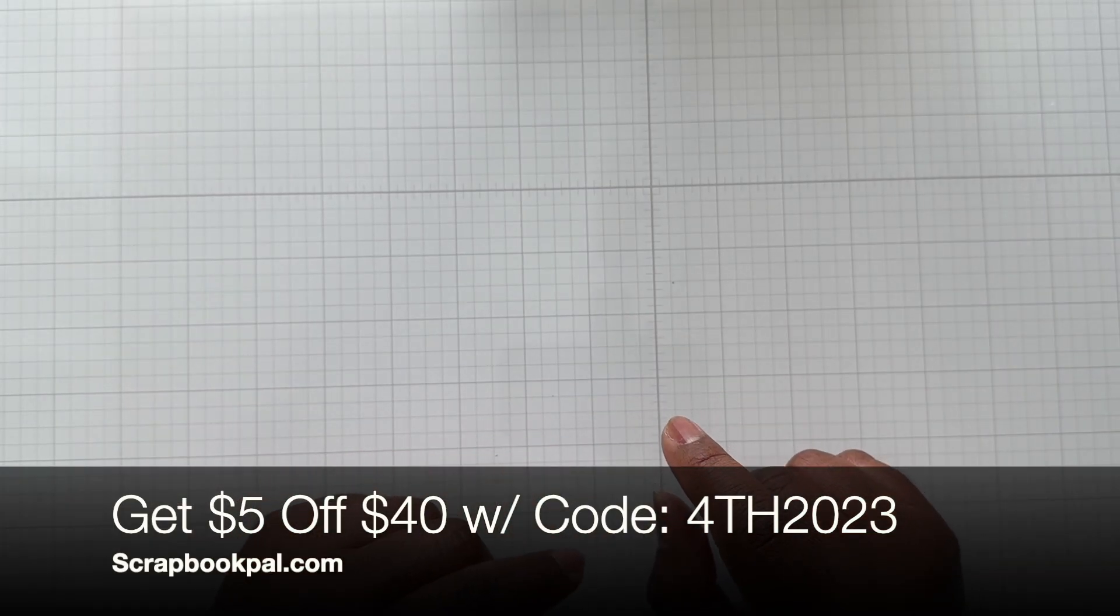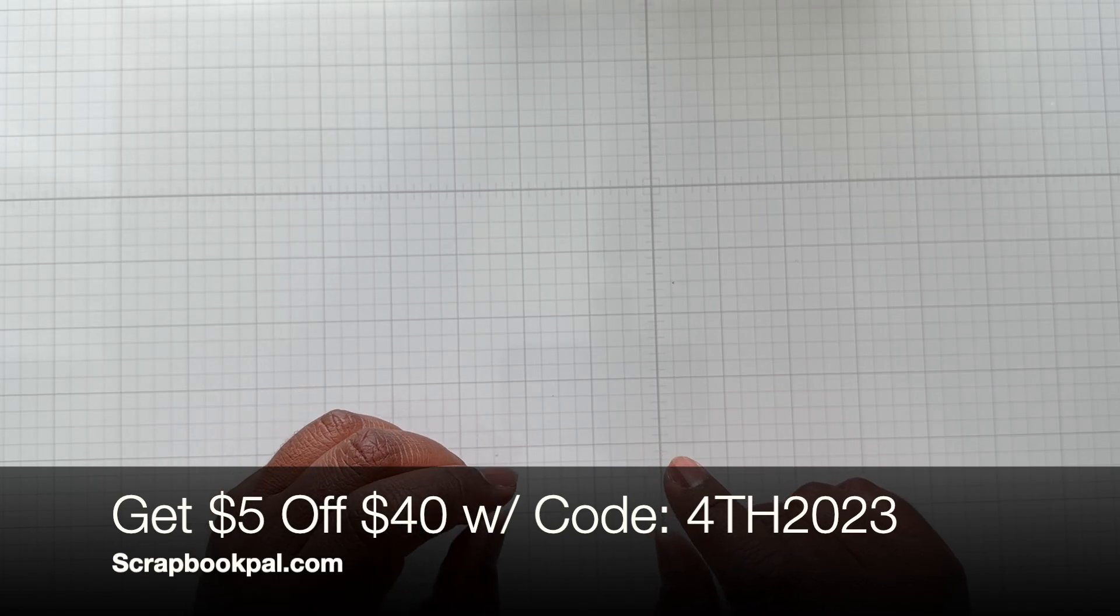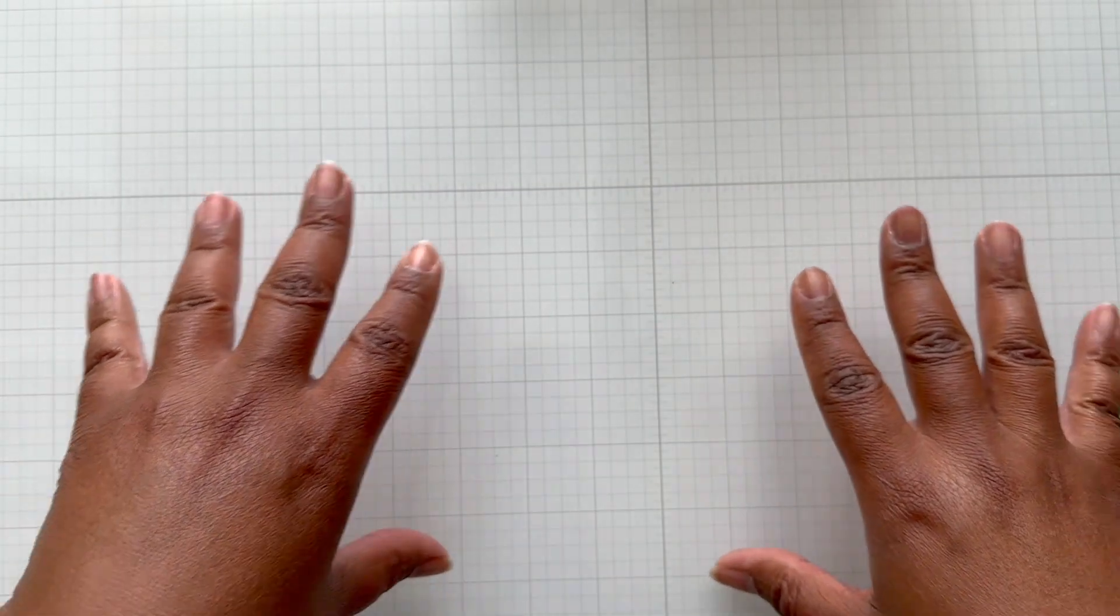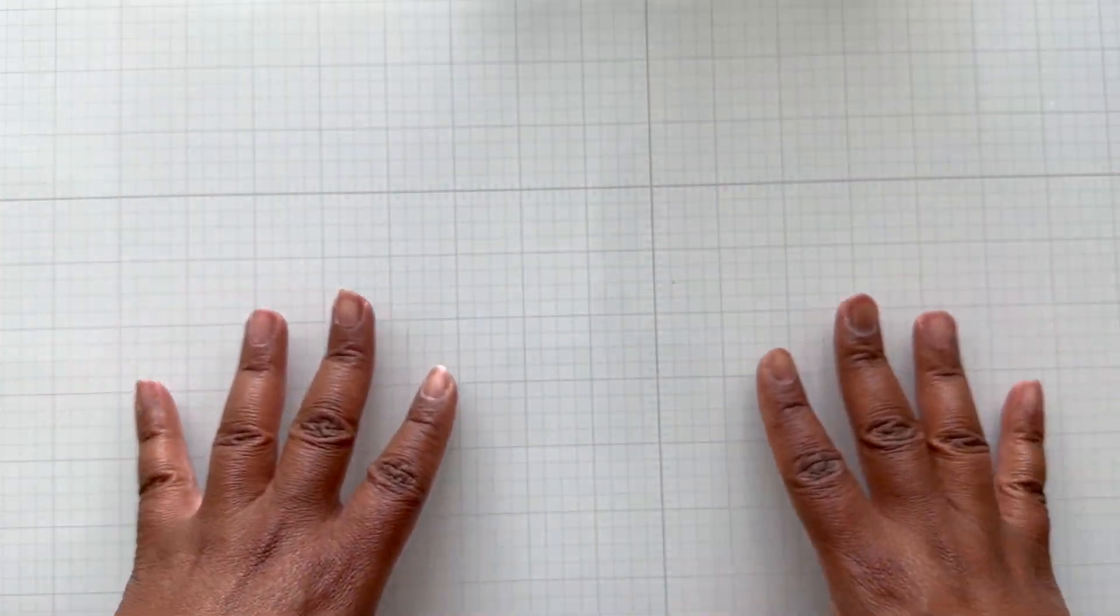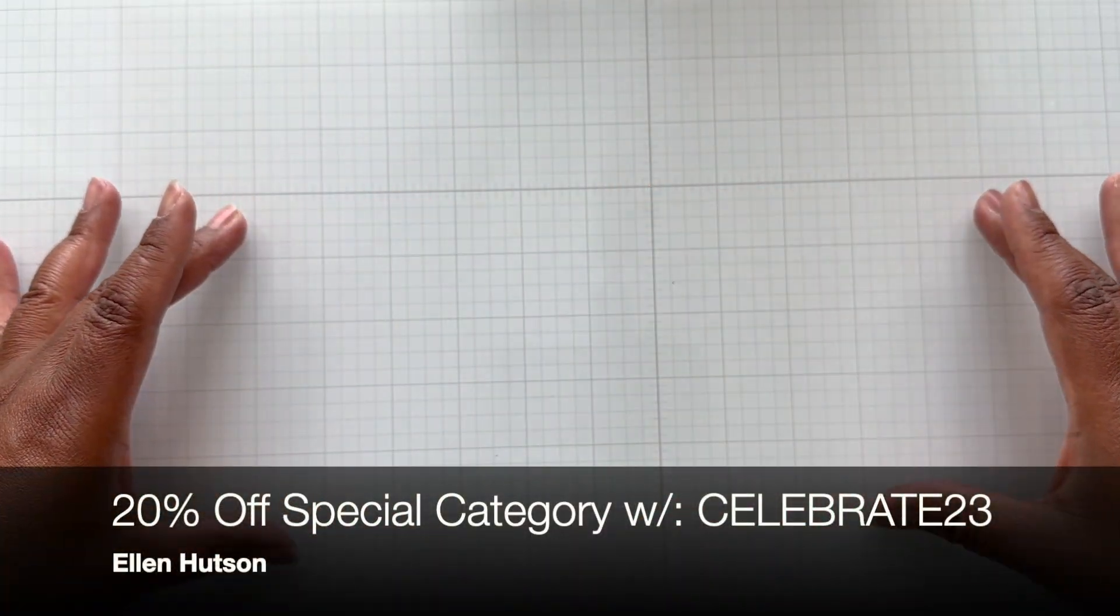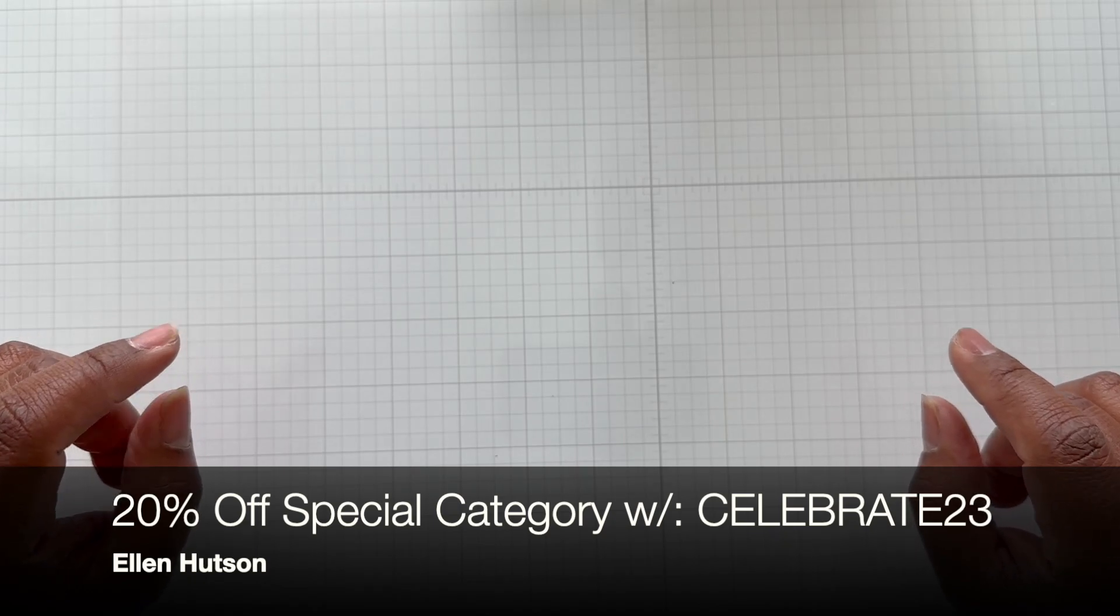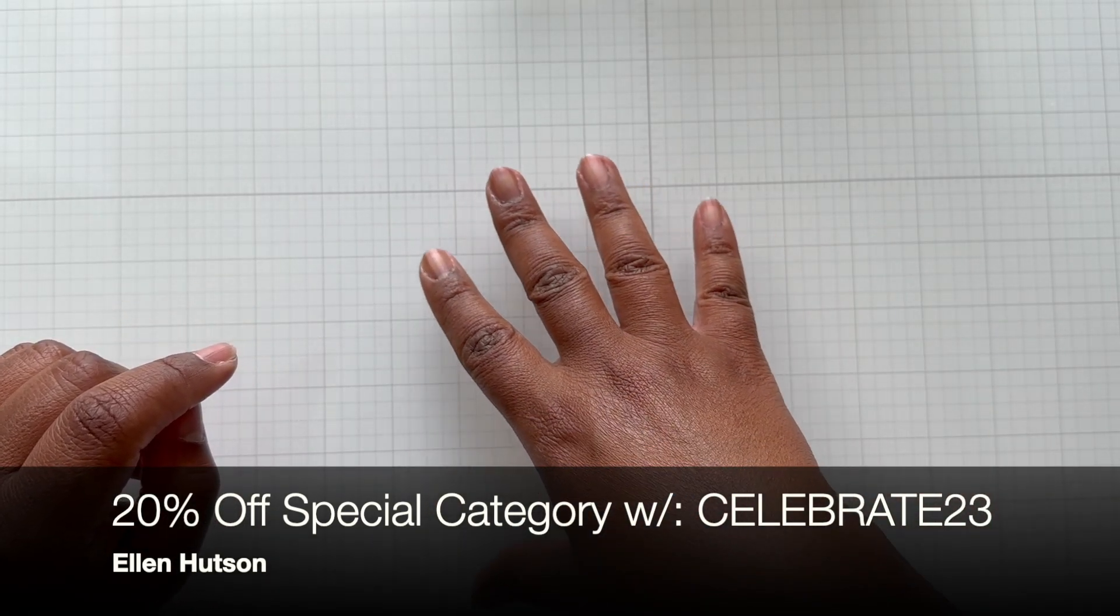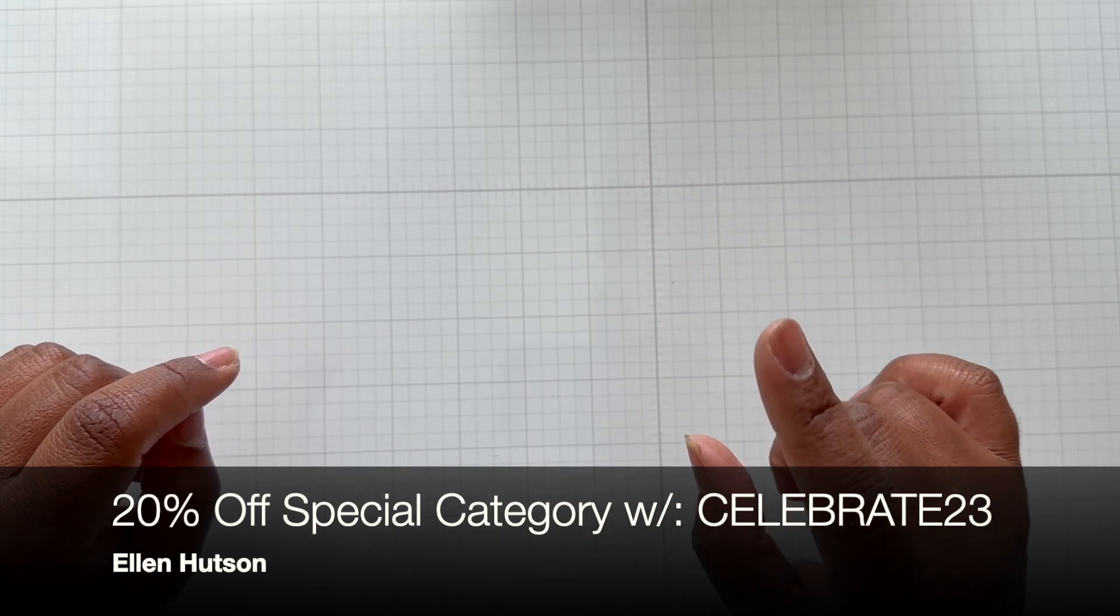Scrapbook Pal has $5 off $40 with the code 4TH2023. Next, Ellen Hutson. She has a lot of items in her special category, and there are a lot of new items with 20% off. Some are sold out though. The code is CELEBRATE23.